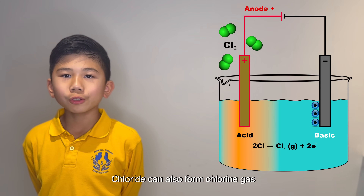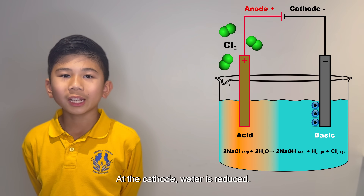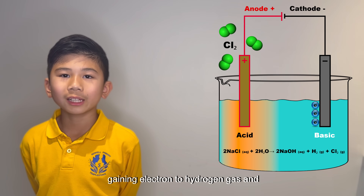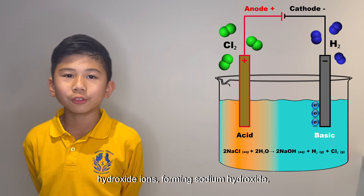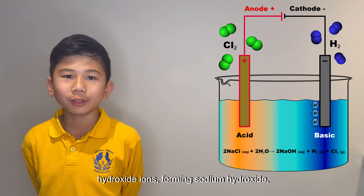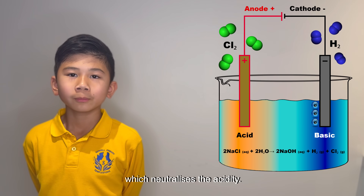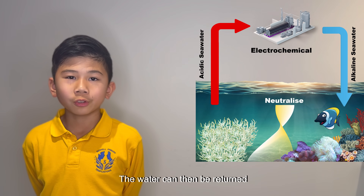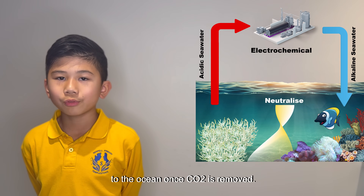Chlorine can also form chlorine gas as a side reaction. At the cathode, water is reduced, gaining electrons to produce hydrogen gas and hydroxide ions, forming sodium hydroxide, which reduces acidity. The water can then be returned to the ocean once CO2 is removed.